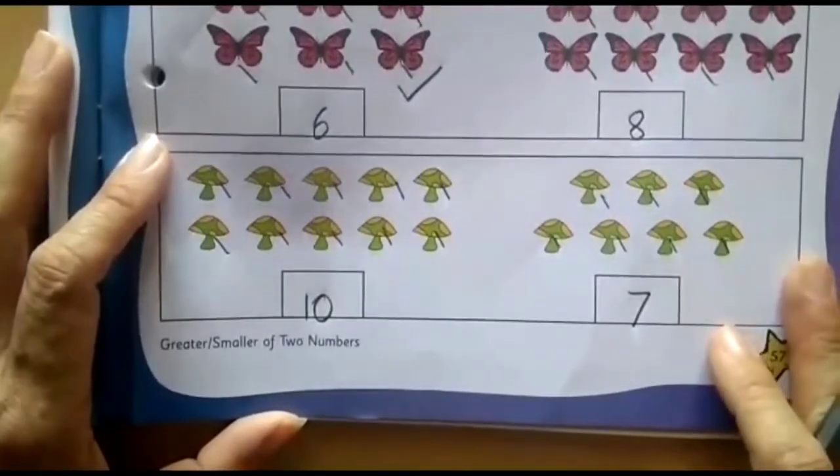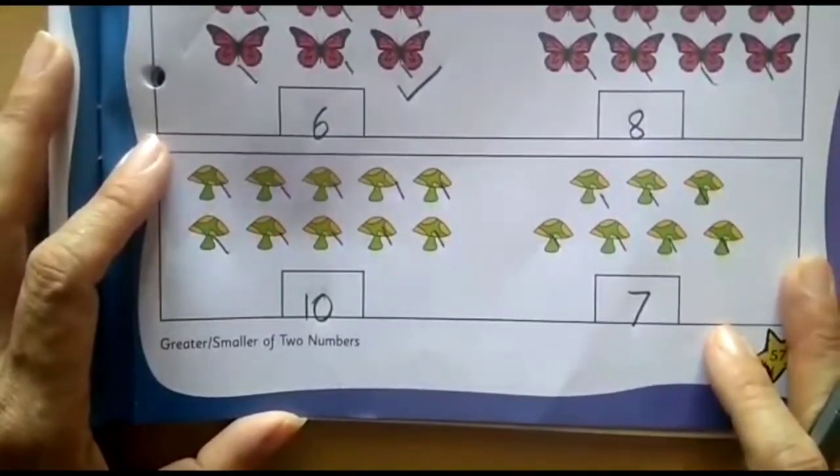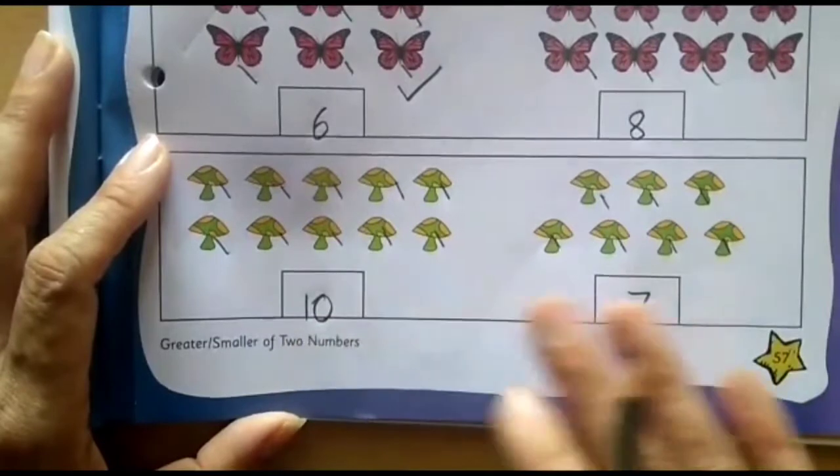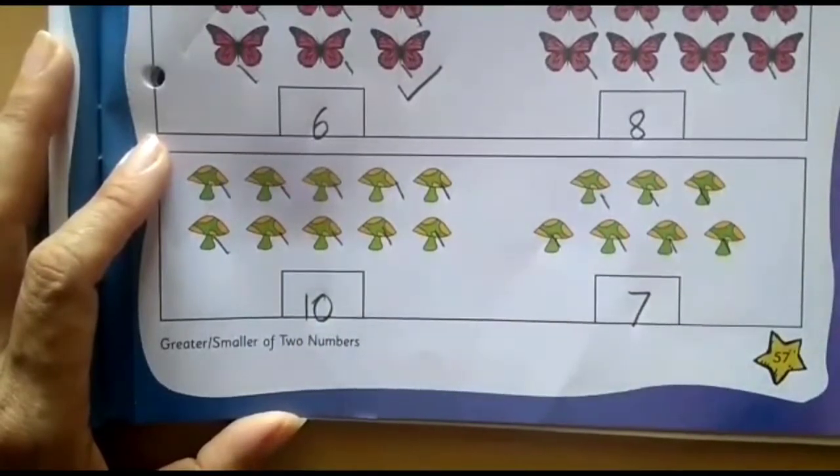So now also when we will start counting, we have to see. We have to count till the numbers when both the numbers are covered. Let's begin. 1, 2, 3, 4, 5, 6, 7, 8, 9 and 10.